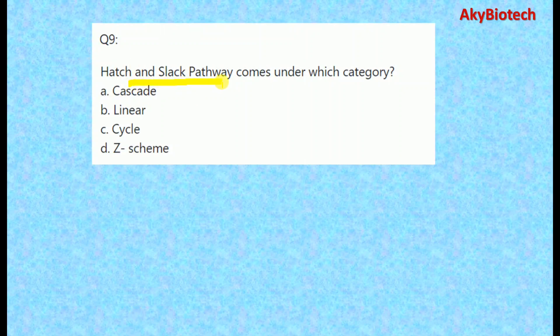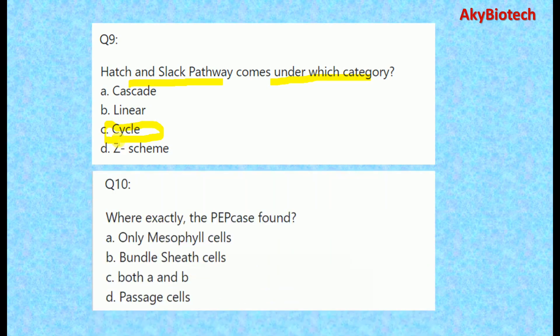Question nine: the Hatch-Slack pathway comes under which category? This pathway is a cycle. Question ten: where exactly is PEP carboxylase found? We know that it is found only in mesophyll cells. All these questions are very important and have been asked many times in examinations, so please go through them thoroughly.